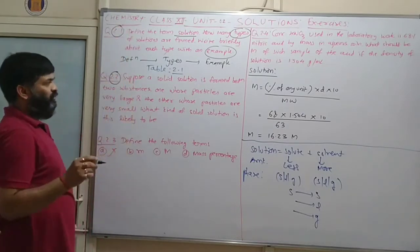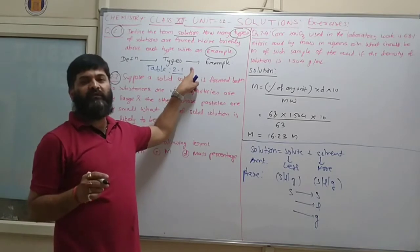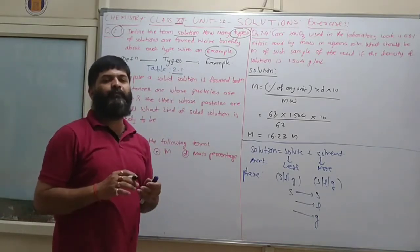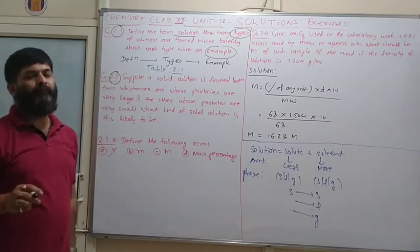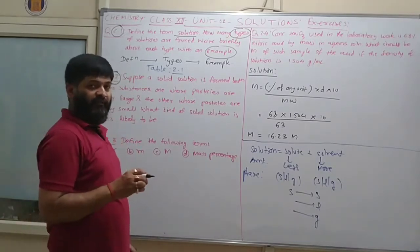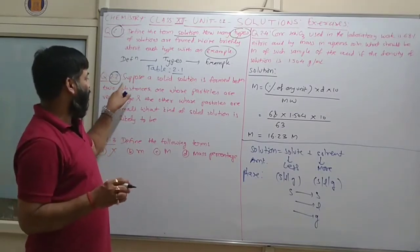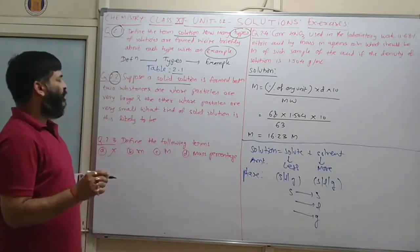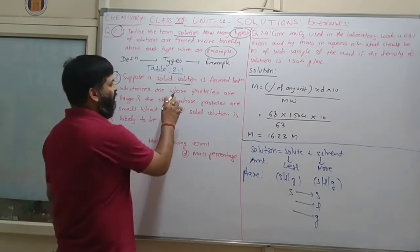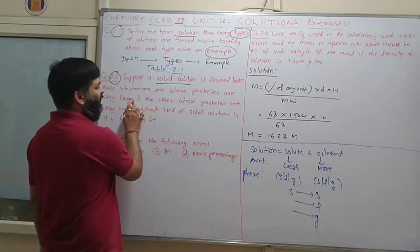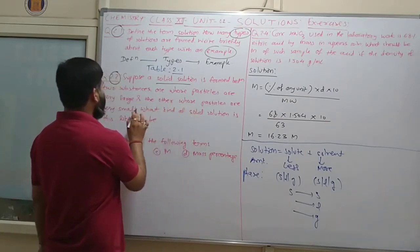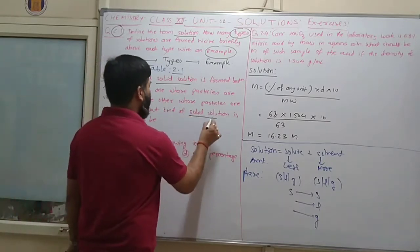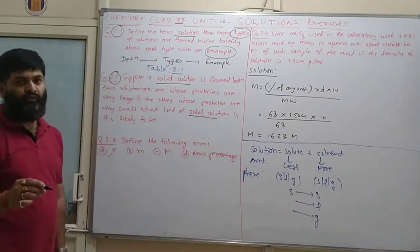Question number 2.2: Suppose a solid solution is formed between two substances — one whose particles are very large and another whose particles are very small. What kind of solid solution is likely to be formed?